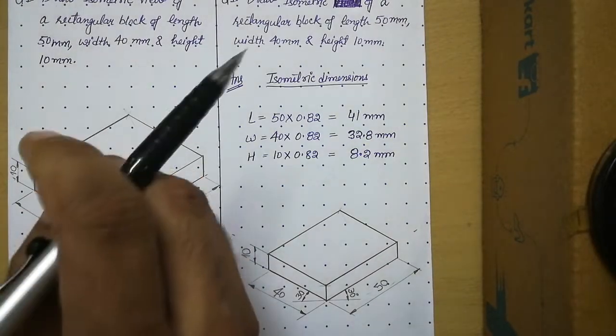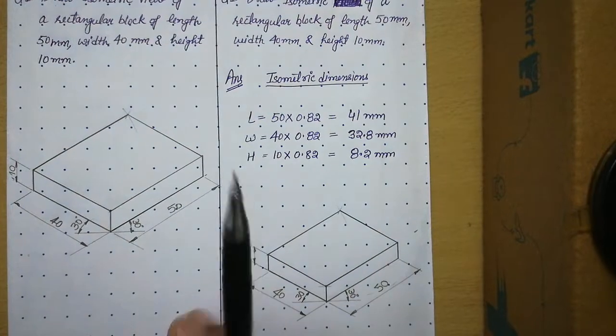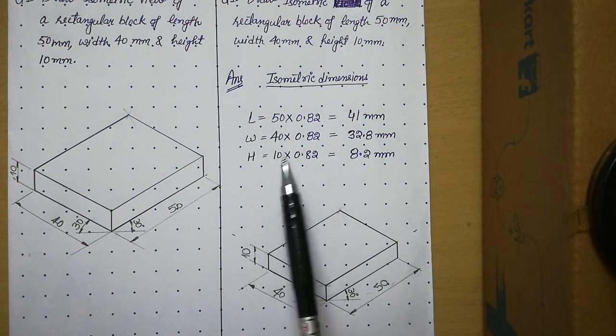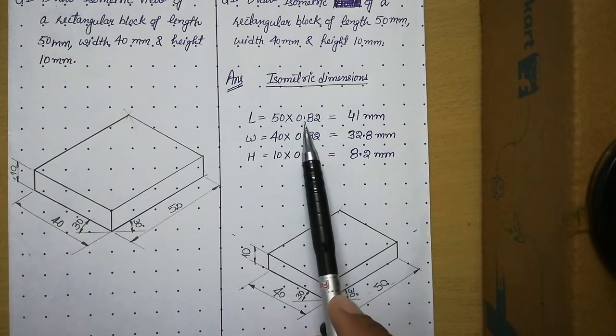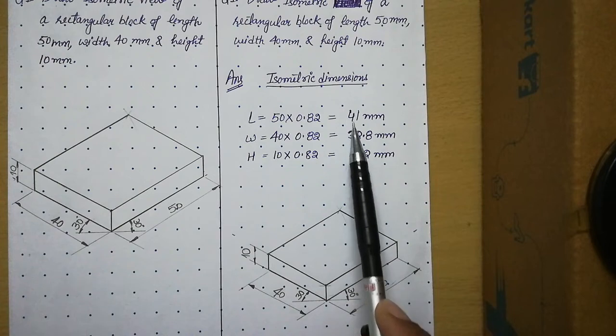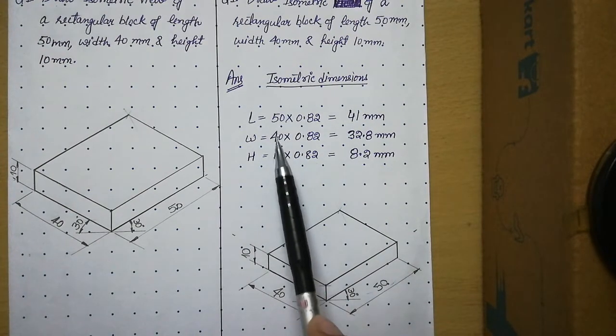That whenever you have to solve isometric projection problem, then you need to reduce original dimensions by 18%. So for that you have to multiply by 0.82 to get isometric dimensions which are 82% of the original dimensions.